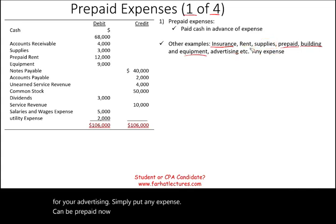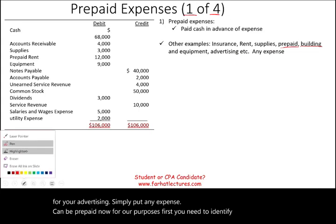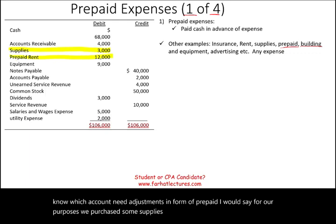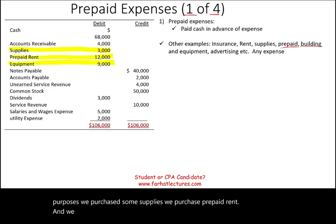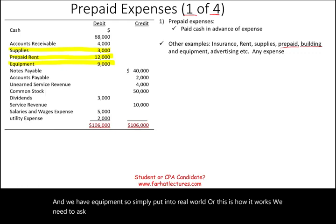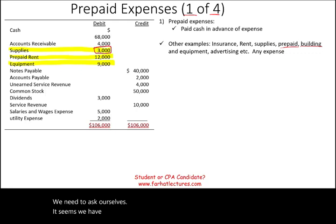For our purposes, we need to identify which accounts need adjustments in the form of prepaid. We purchased some supplies, prepaid rent, and we have equipment. In the real world, we need to ask ourselves: it seems we have $3,000 of supplies — do we still have $3,000 worth of supplies? If the employees say yes, no adjustment is needed.